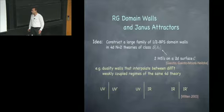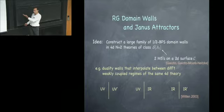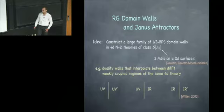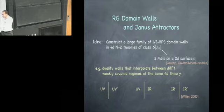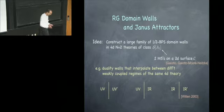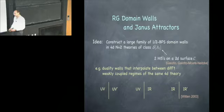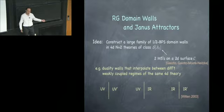The duality walls constructed interpolate between different weakly coupled regimes of the same 4D theory. For example, one can take two weakly coupled UV regimes where the theory is non-abelian, corresponding in class S language to two different pants decompositions of a certain Riemann surface. More interestingly, one can build a wall that interpolates between a weakly coupled UV regime and an effective Seiberg-Witten theory that's weakly coupled in the infrared.